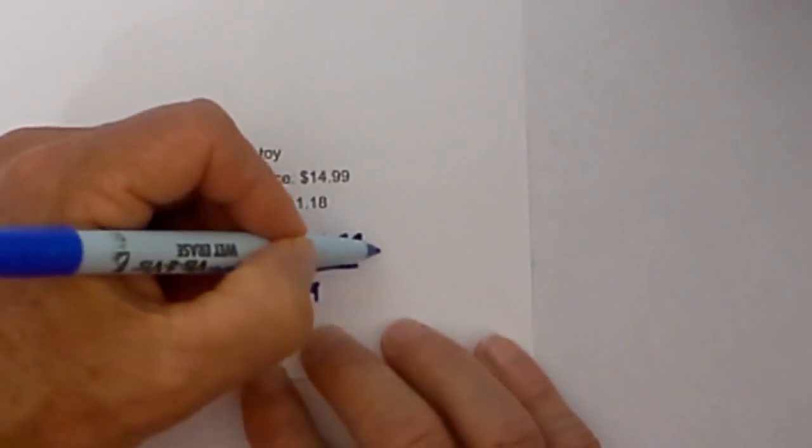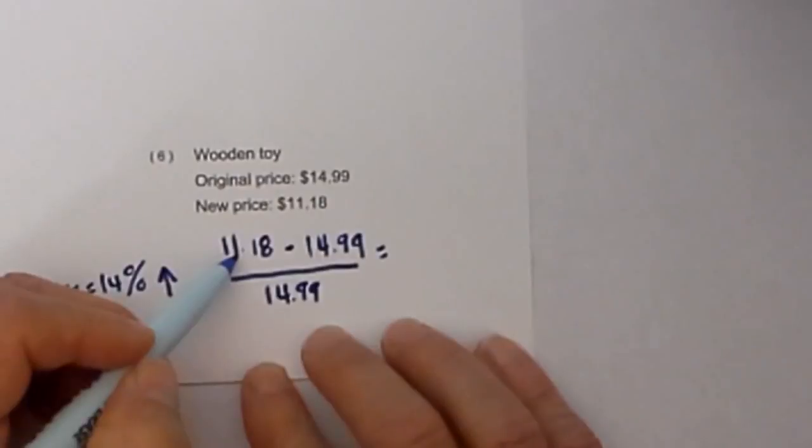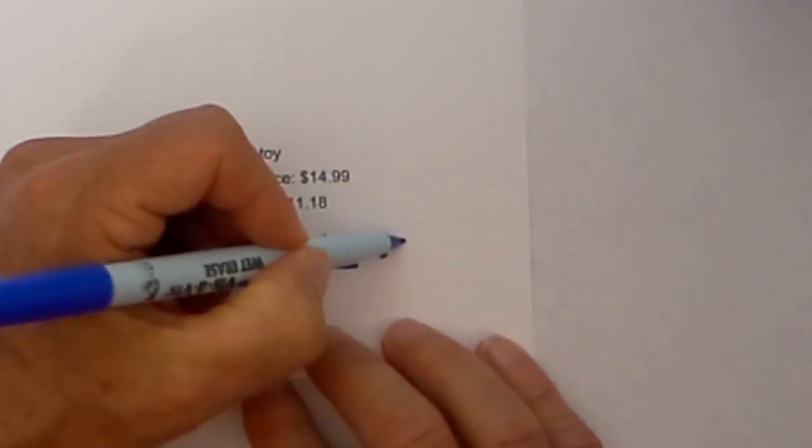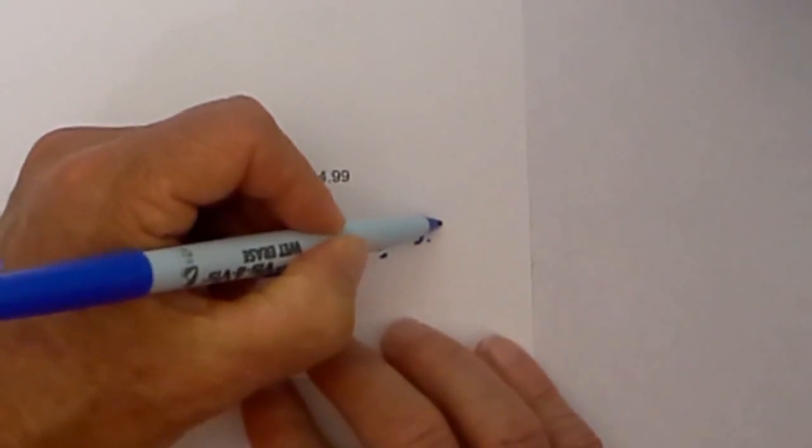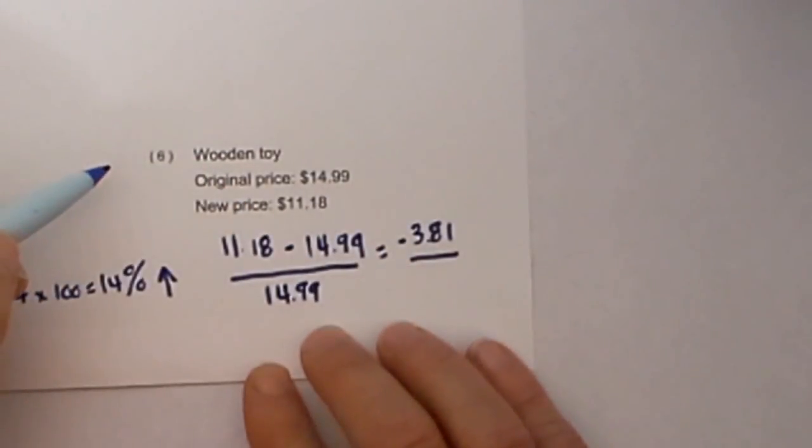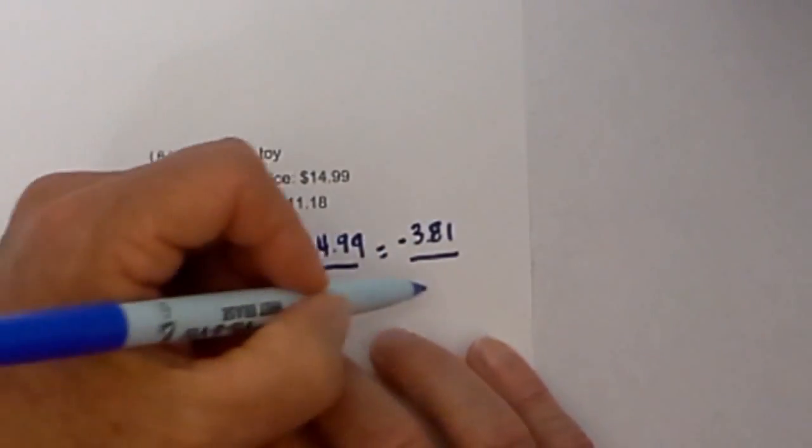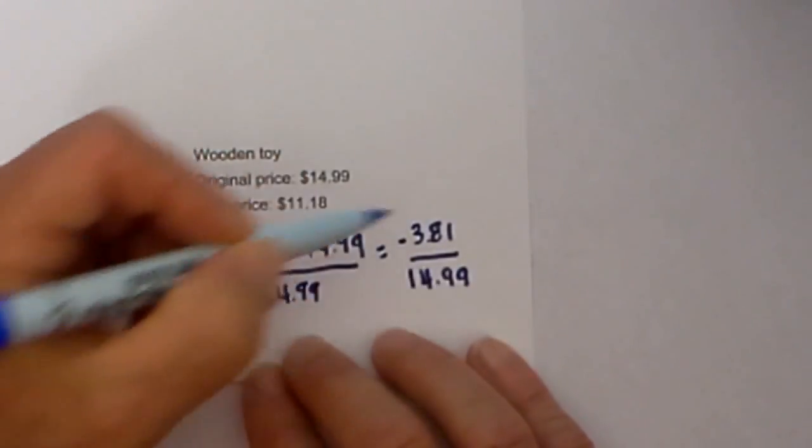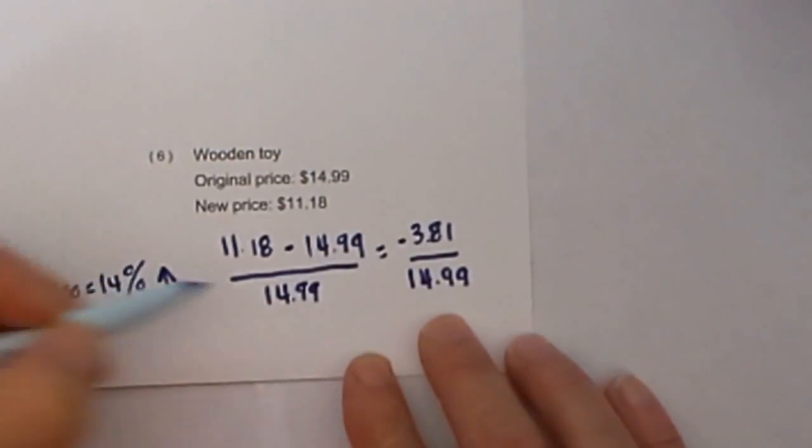When you subtract 11.18 minus 14.99, you get negative 3.81. That tells you it's going to be a percent decrease. You put 14.99 because that's the old or original price.